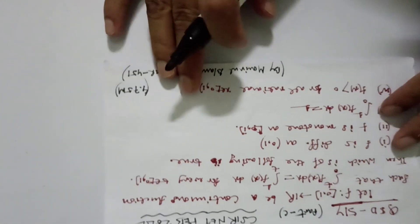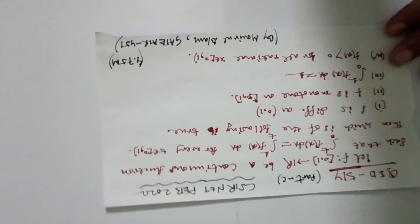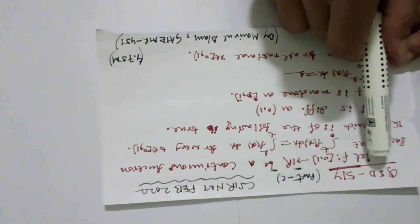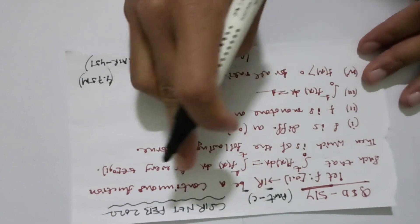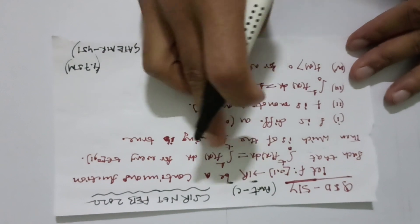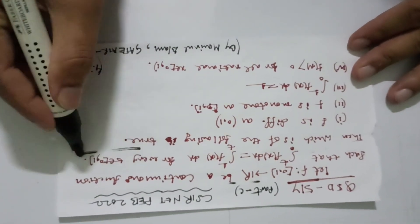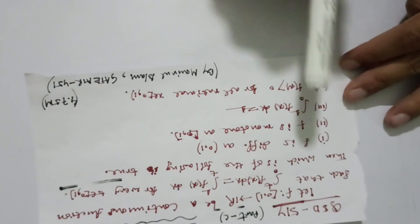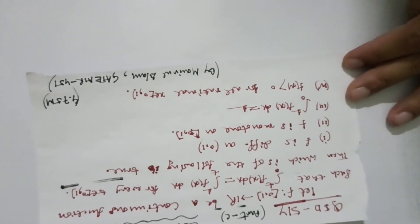Hello dear students, I am Monad. Today in the video we are going to discuss an important question of CSN NET 2022 from Part C. The question ID is 514. The question is: F is a function from [0,1] to R, a continuous function, such that the condition ∫₀ᵀ F(s)ds = T² ∫₁ F(s)dx holds for every T ≥ 0. There are four options: F is differentiable, F is monotonic, ∫₀¹ F(s)ds = 1, and F > 0 at every rational point.